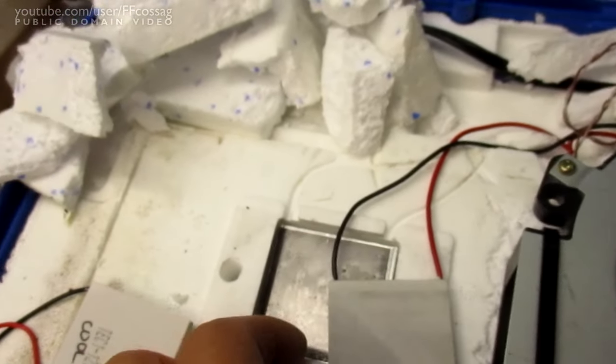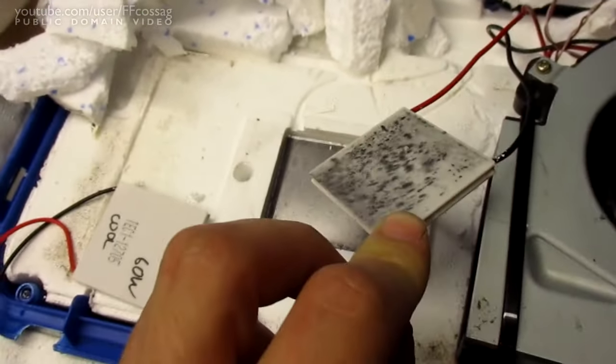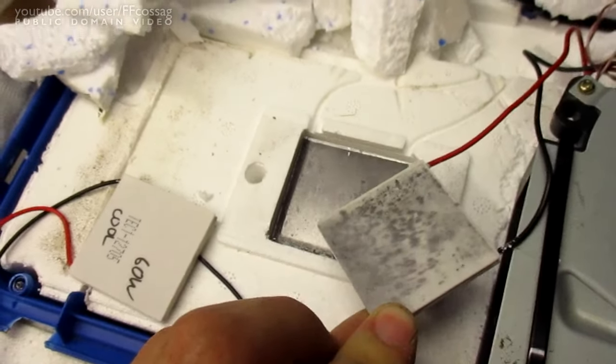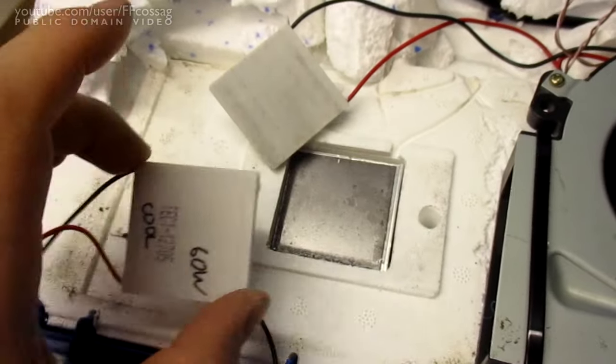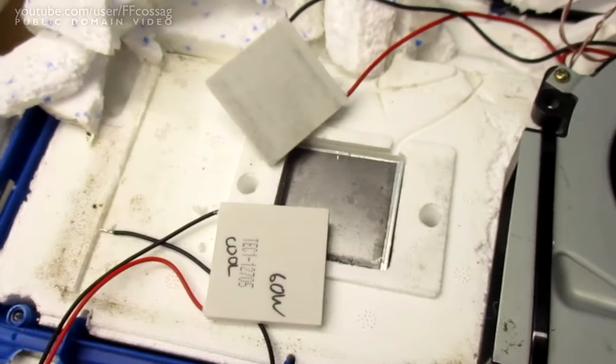You can clearly see how there's actually been water between the TEC and the heat sink. So I'm just gonna strip this one out, put this one in there instead, and hope it gets better.